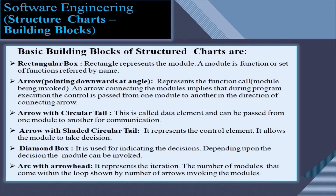The third symbol is an arrow with a circular tail, called a data element, which can be passed from one module to another for communication. An arrow with a shaded circular tail represents a control element, which allows the module to take a decision on the data element. A diamond box is used for indicating decisions; depending upon the decision, a module can be invoked. An arc with an arrowhead represents iteration, and the number of modules within the loop is shown by the number of arrows invoking those modules.